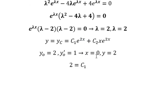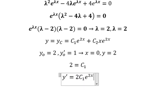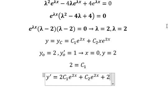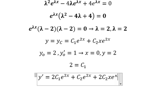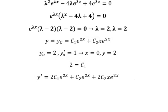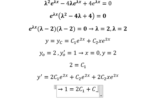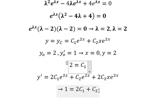Now we take the first derivative of y. We get c1 times two times e to the power of two x, plus c2 times e to the power of two x, plus c2 times x times two times e to the power of two x. We substitute x equals zero, and since c1 equals two, we substitute that in to find c2.